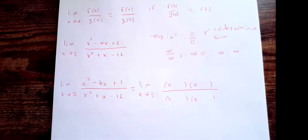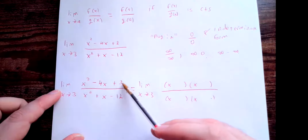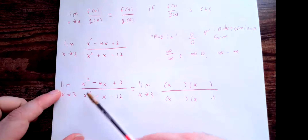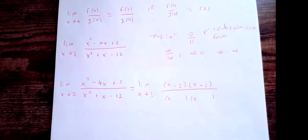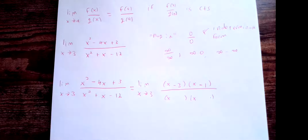For the numerator, I need numbers that multiply to 3. My choices are 1 and 3 or −1 and −3. Since I need them to add to −4, I pick −3 and −1, giving (x − 3)(x − 1). Expanding that gives x² − 4x + 3. For the denominator, the factors of 12 are 1 & 12, 2 & 6, or 3 & 4 — at least if expecting integer coefficients.